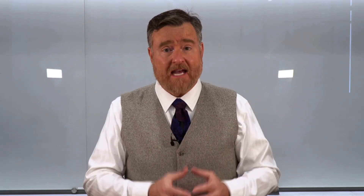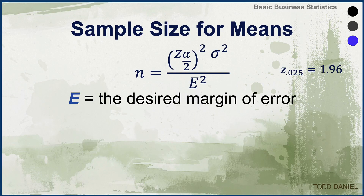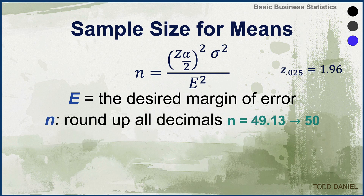Let's look at the formula we are going to use to calculate how large of a sample we need if we are looking for means. In this formula, capital E represents the desired margin of error, and N will be our desired sample size. Note that because the sample will always include whole numbers, if we get a decimal we will round it up, even if that decimal is closer to the lower number. For instance, 49.13 would typically round down, but in this case it would round up to 50.